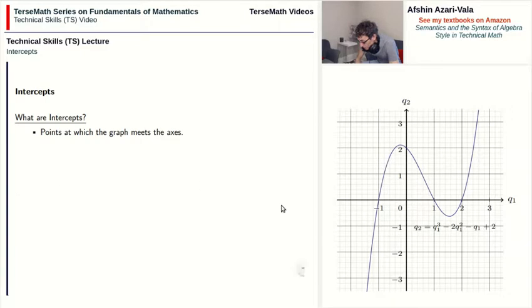In the graph on the right side there are three intercepts on the q1 axis. These are this point, this one, and this one. We call them q1 intercepts. There is also one intercept on the q2 axis. We refer to this point as the q2 intercept.